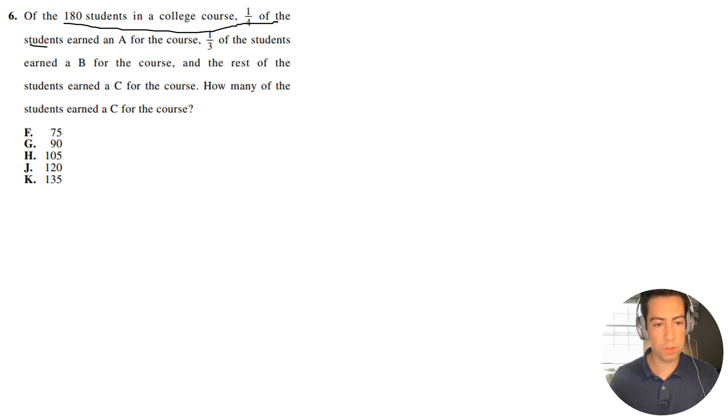One-fourth of the students earned an A for the course, one-third of the students earned a B for the course, and the rest of the class earned a C for the course. How many of the students earned a C for the course?